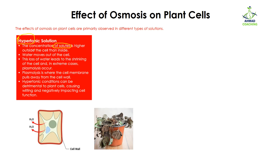If you place your plant in a hypertonic solution, the concentration of solute is going to be high outside the cell, and your plant cell has low concentration of solute. In this case, water is going to move from the cell to outside, because the purpose of osmosis is to maintain the water potential inside and outside the cell so that a balance or equilibrium is achieved. This loss of water will lead to the shrinking of the cell.